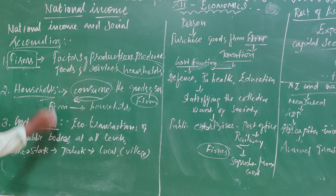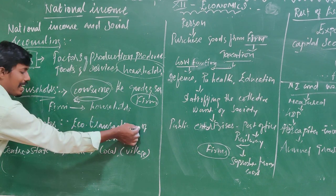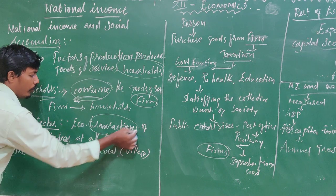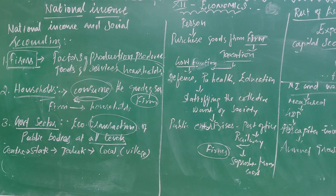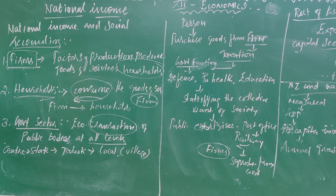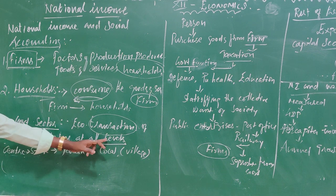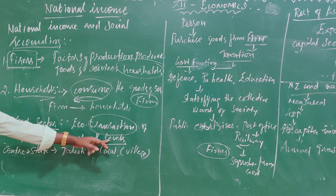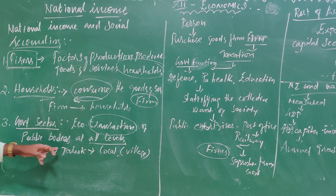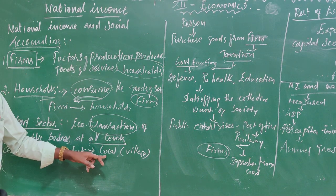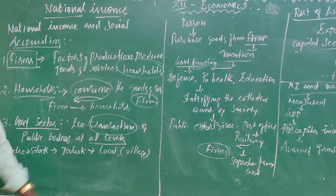The forms of the household sector involve different transactions. There are different levels of government sector — all levels are of four types: the first type is Central Level, then State Level, then Taluk Level, and Local Level, which means Village Level.